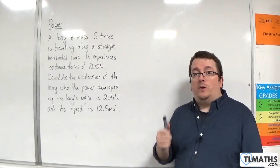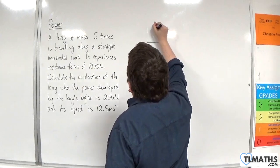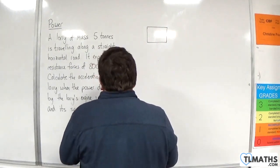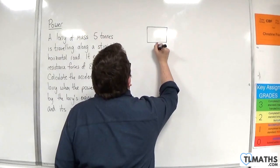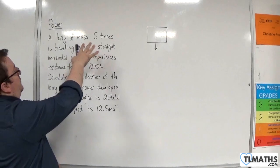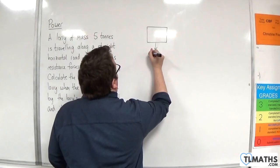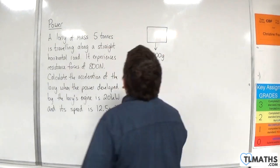So the first thing that we should do is draw a diagram. So here is my lorry and it will have a weight of 5 tonnes times g. So that's 5,000 kilos times the acceleration due to gravity.